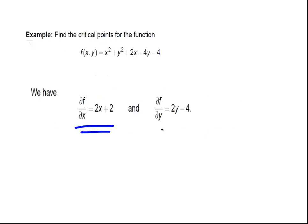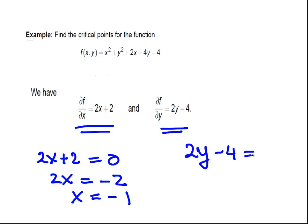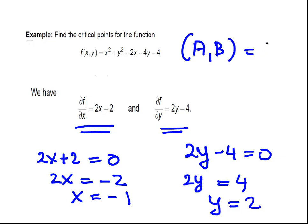We have 2x + 2 = 0, so 2x = -2, therefore x = -1. Likewise, 2y - 4 = 0, so 2y = 4, therefore y = 2. So our point that we're looking for in this particular example is simply (-1, 2).